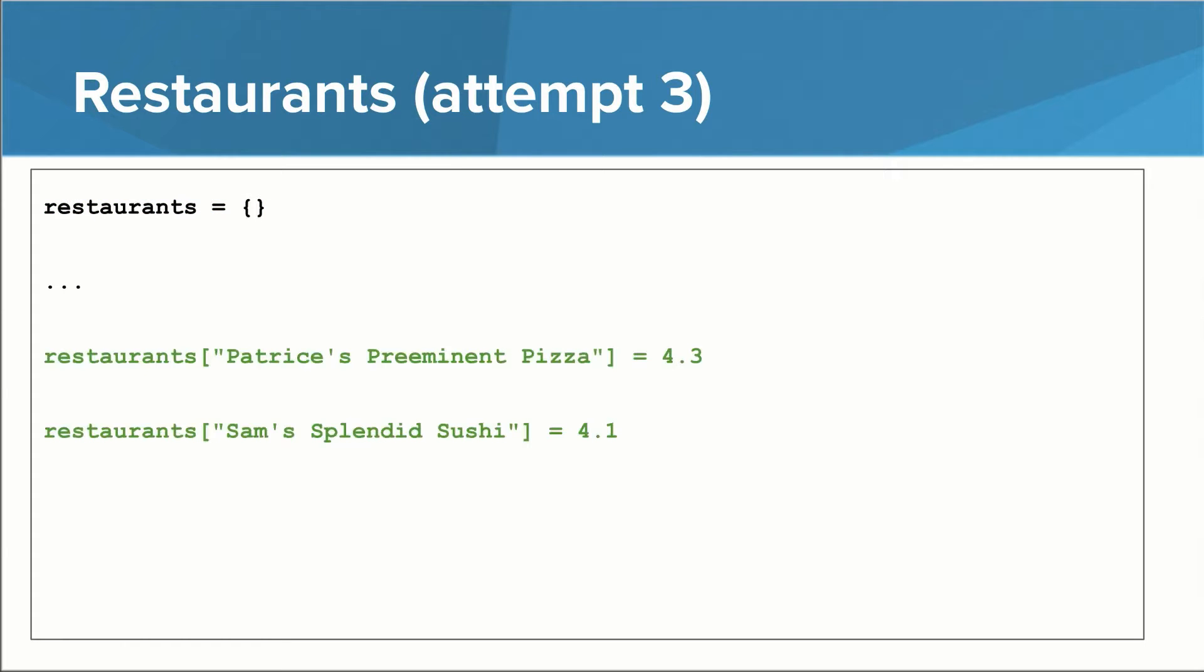We can then insert key value pairs into our dictionary like this. Note that when inserting things into our dictionary, we use square brackets. This will be true when we retrieve things from our dictionary as well. It might look a little weird that we're using a string inside the square brackets here. You're used to using square brackets with lists, and when you're dealing with lists, the thing that goes inside the square brackets is an index, an integer.